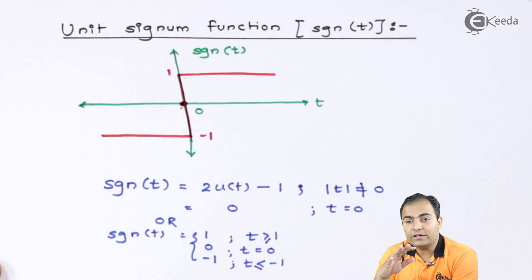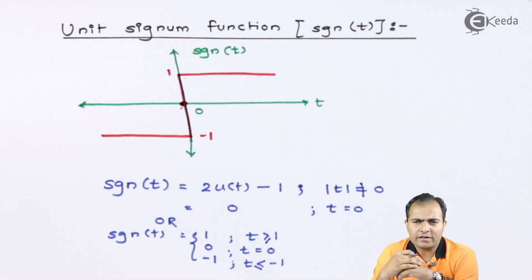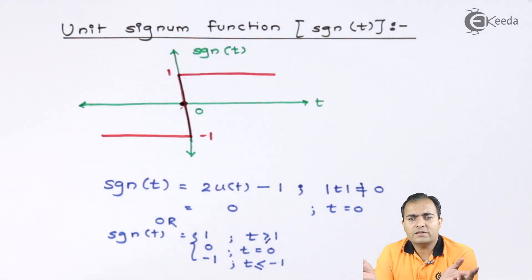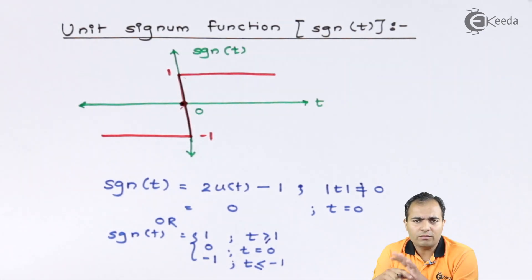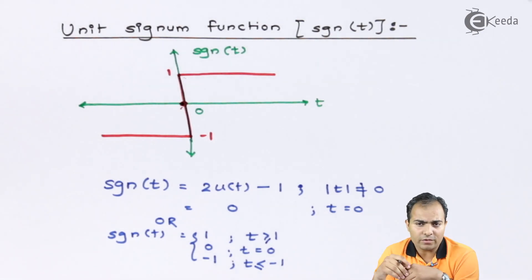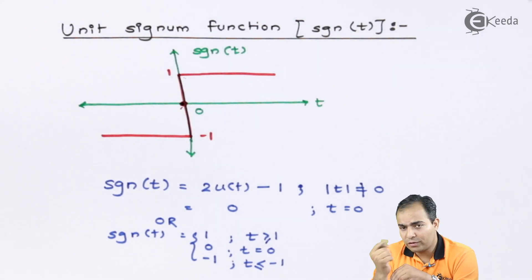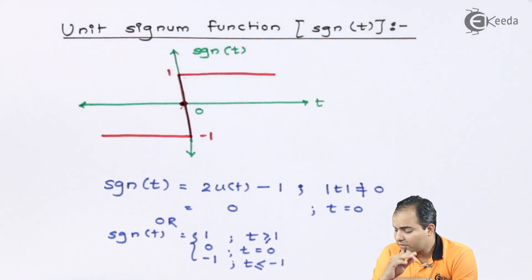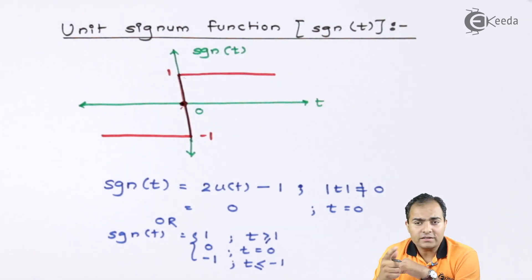The signum function is mostly used in Fourier transform. This graph is available onwards 0 on both the sides, and it is having amplitude plus 1 and also minus 1 on positive half cycle and in negative period.